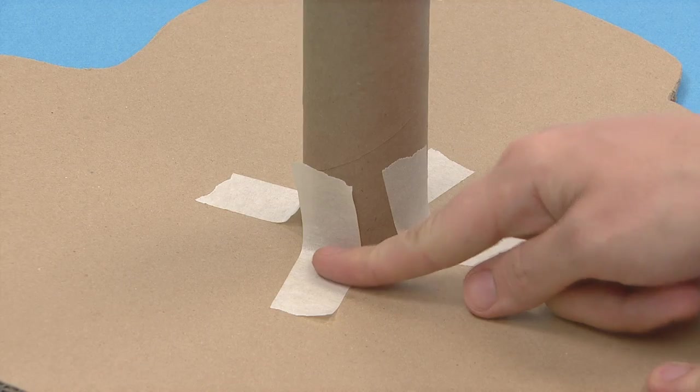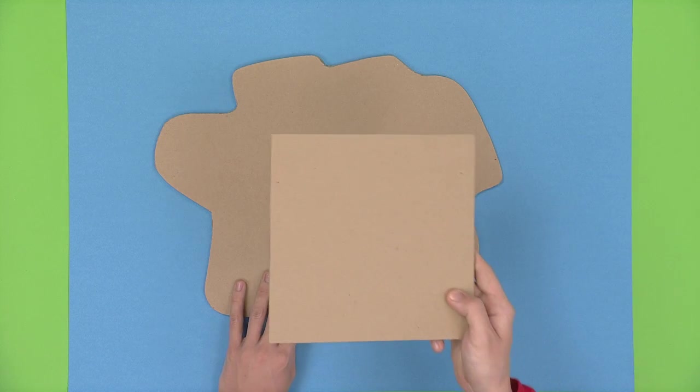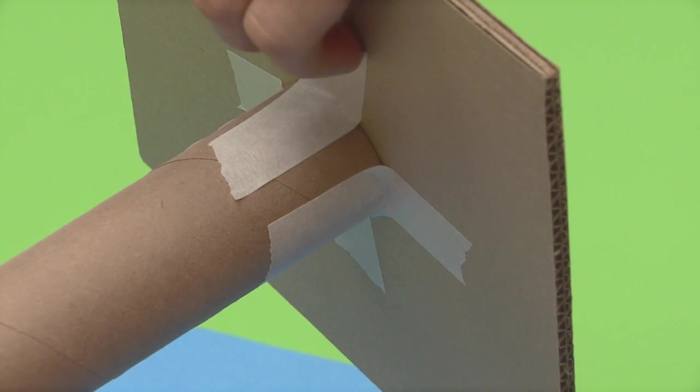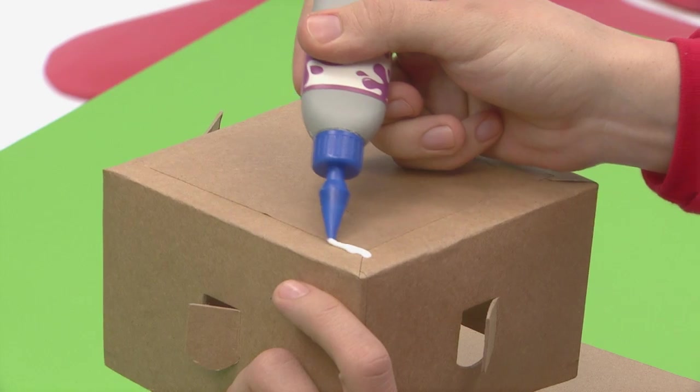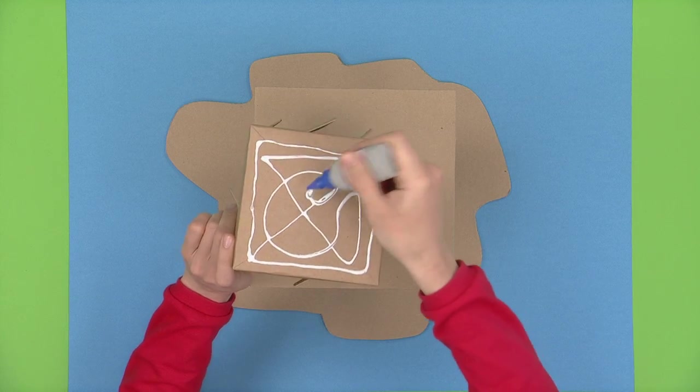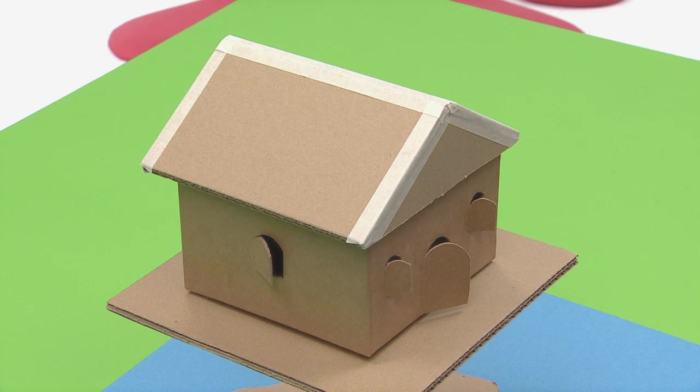Then grab the big square you cut before and tape it to the roll. Finally, glue the bottom part of the house and stick it there. When you put the roof on, it's almost like a real house.